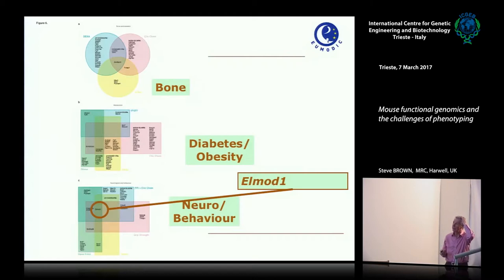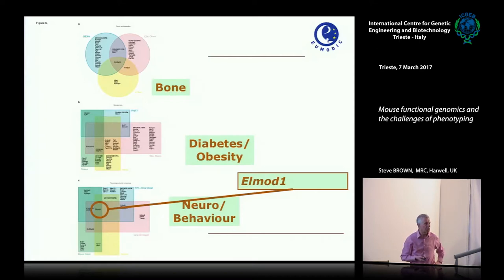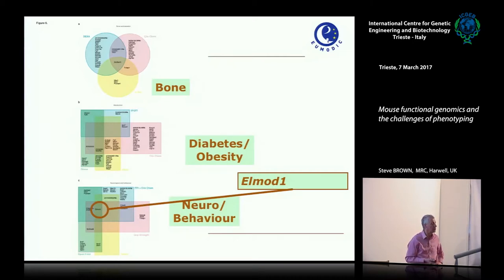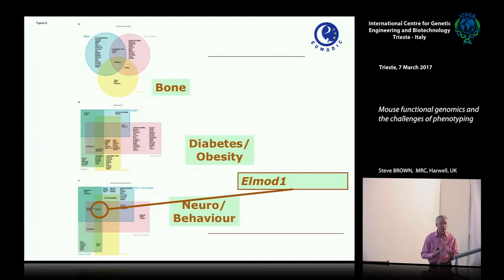Here's a gene, L-MOD1, that nobody really knew anything about. It is picked up by many of the phenotyping tests that underpin neurological and behavioural dysfunction. It's a novel gene, highly expressed in the brain, but we didn't know what it did. I'll come back to that in my second talk. This illustrates that projects like this can give us a huge window into gene function and novel disease models.